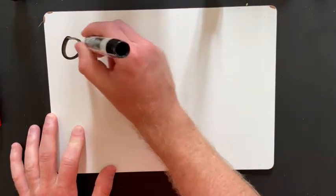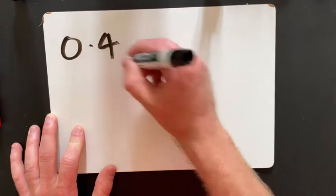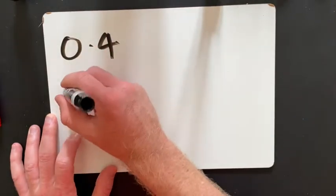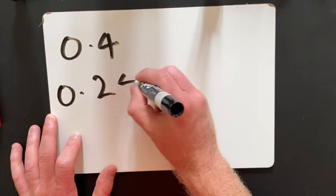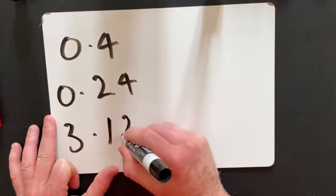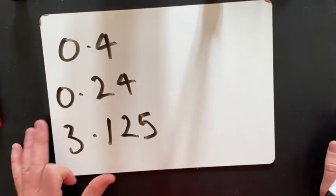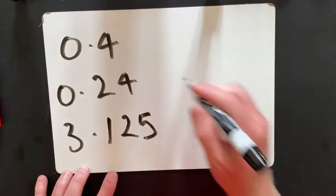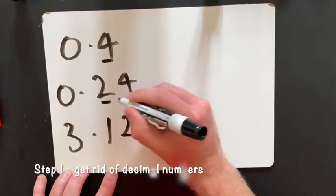In this video I'm going to be showing you how to convert fractions to decimals and decimals to fractions. So if I have a decimal number like 0.4, 0.24 and 3.125, the first thing I'm aiming to do is to get rid of the decimal numbers.